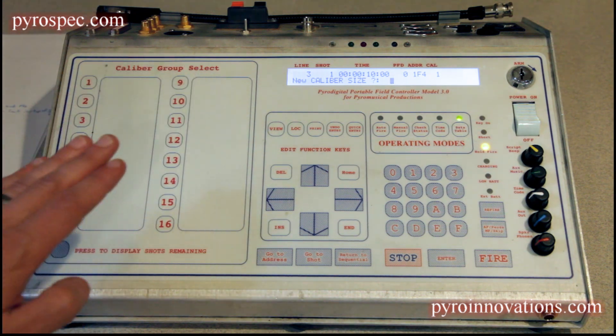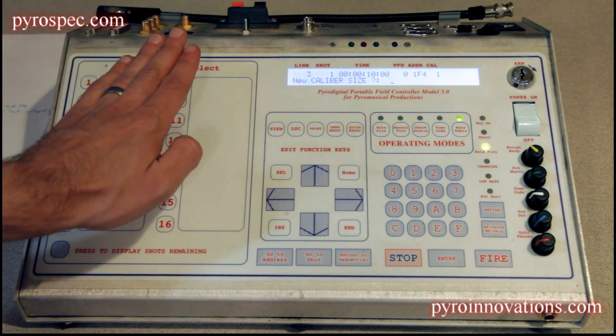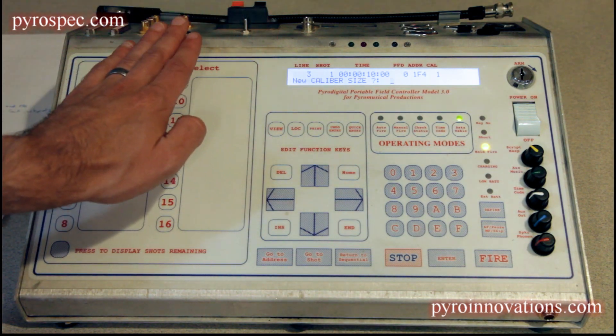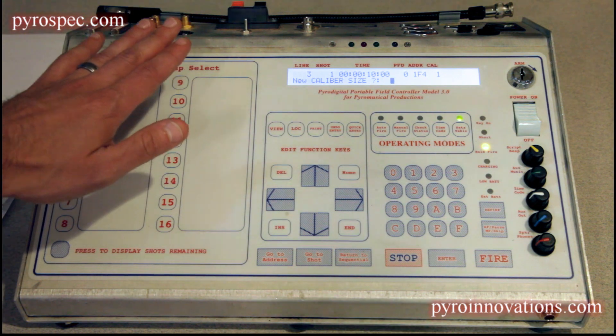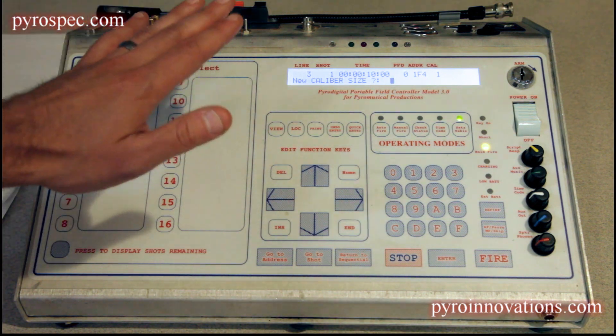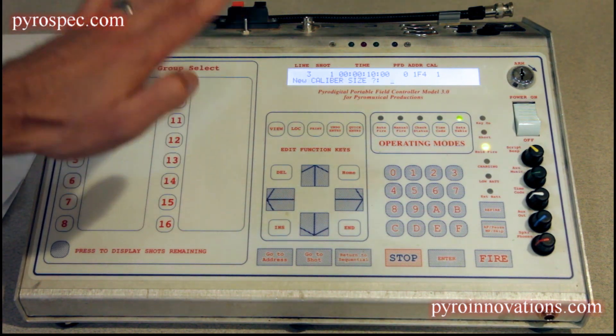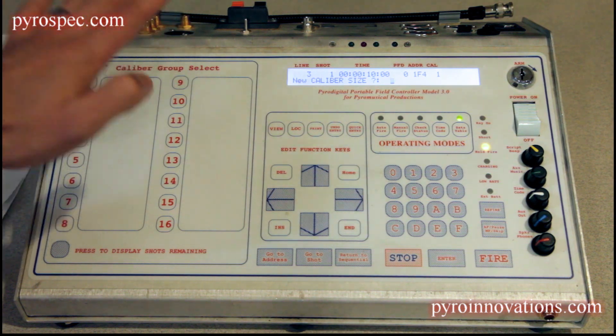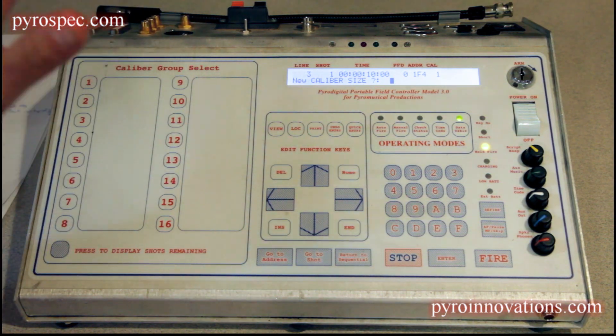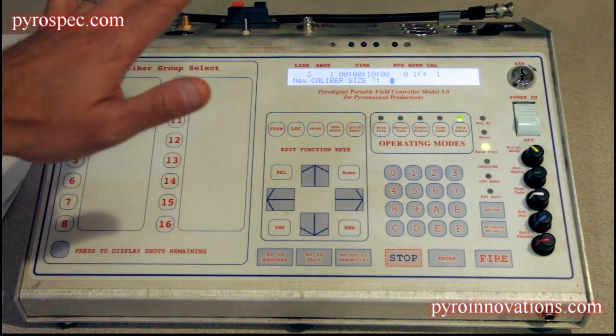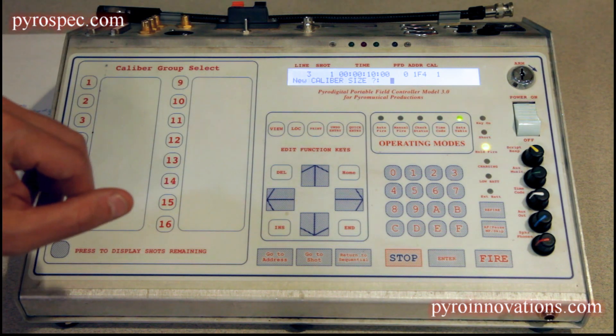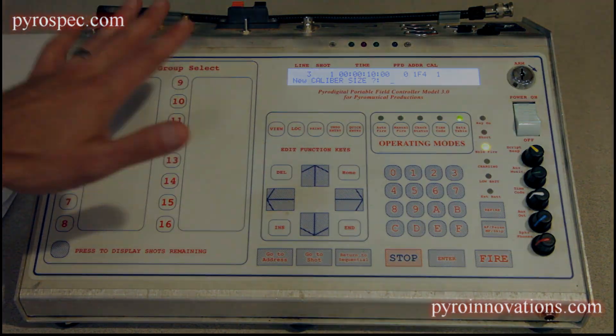For that reason, you can't have more than one cue on a given field module fire in a zipper fire event. If you want two shots to fire from the same field module in a zipper fire event, you simply wire those two devices into the same cue so that they both fire from that same cue number.